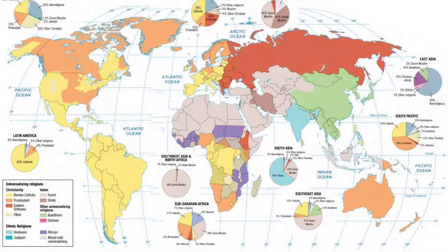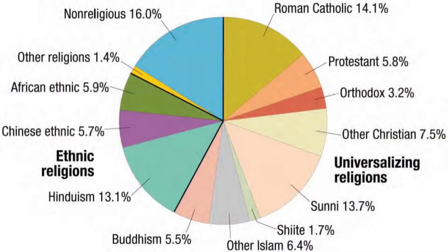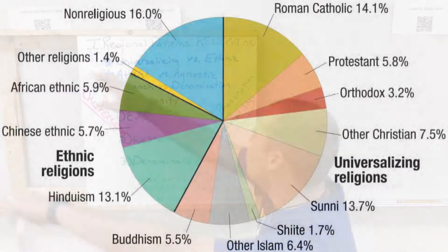The maps on your screen show you where these religions actually are, and it's important that you understand those. This pie chart shows you the breakdown of these religions and the percentages of where they're found. Your three major monotheistic religions you can see on this map: Christianity, Islam, and Judaism — monotheistic meaning one God.